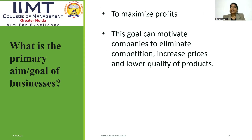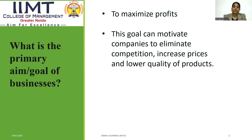Before entering why we define market in different structures, we first need to know what is the primary and main goal of any business. The first thing that matters to a CEO or the managing team is to maximize their profit. Everyone in a firm wants to maximize their profit. So the first and primary goal of any business is to maximize profit. Because of this aim, companies try to eliminate the competition.